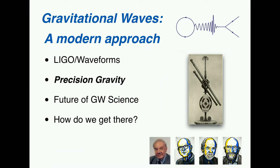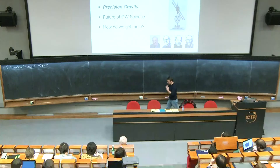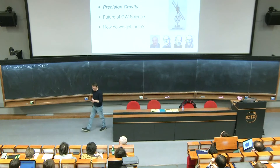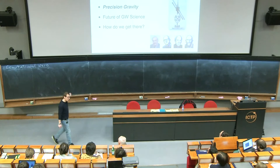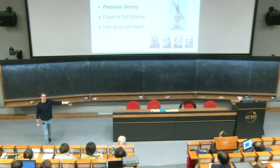The key for you will be how do we get to this level of precision, because the tools and the template bank that we have right now to extract the best information about the sources is not accurate enough. To get to the level of precision required might need new tools. I will tell you how we do the calculations, and then you will see that they get very complicated, and at some point we might need to redefine the way we do these calculations in general relativity.